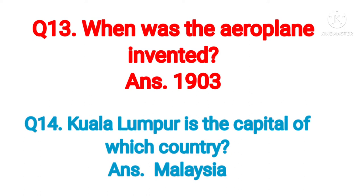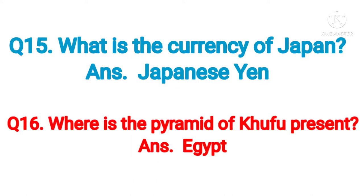Question number thirteen: when was the airplane invented? Answer: 1903. Question number fourteen: Kuala Lumpur is the capital of which country? Answer: Malaysia. Question number fifteen: what is the currency of Japan? Answer: Japanese Yen.